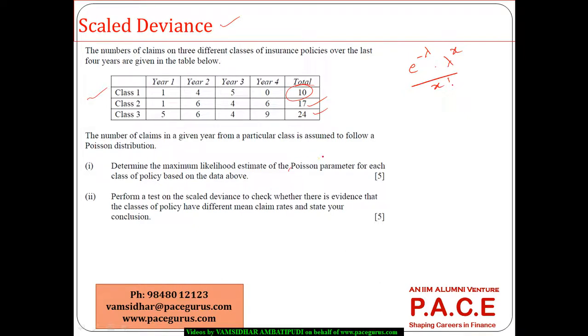For the Poisson parameter for each class I am asked to find out the maximum likelihood estimate. Now here lambda is per year, so over a four year period the parameter is going to be 4 lambda. So which means my likelihood estimate for the first risk: e to the power of minus 4 lambda, 4 lambda to the power x, x is 10, divided by 10 factorial.